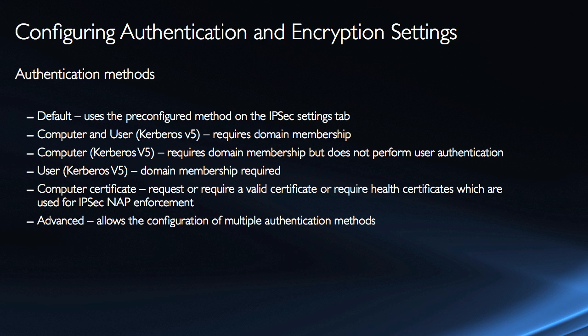When we talk about requesting authentication, what type of authentication do we have? We actually have several methods. The default uses whatever pre-configured method is on the IPSec settings tab, available in the basic firewall properties in the MMC snap-in. But then you have the option to add additional methods. We can add a first authentication method and a second authentication method, or we can just modify the default based on that security rule.